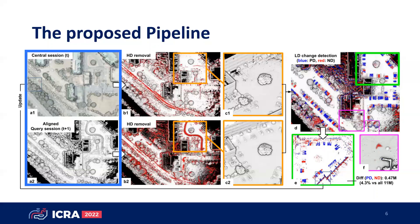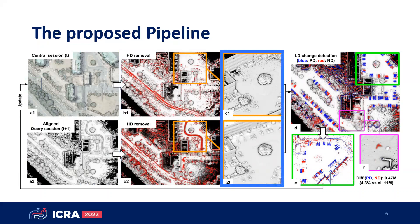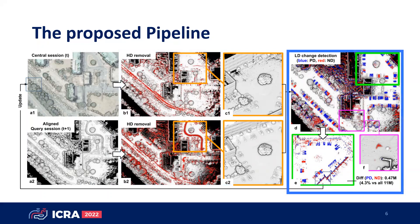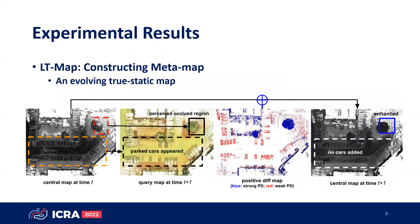This is a visualization of the proposed LT-Mapper system. We first align two sessions by multi-session SLAM, assisted by ScanContext and the anchor node. Then, dynamic objects are removed and we get cleaned maps. Finally, the positive and negative changes are posted to the central map. Thanks to the multi-session SLAM module named LT-SLAM, multiple sessions having different starting poses can be arranged within the shared global frame. LT-Map classifies the detected changes based on egocentric visibility, so non-permanent objects can be not added to the central map. We expect this would be valuable to map a place asymptotically to have a pure static representation.